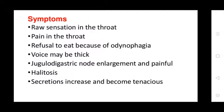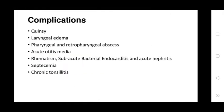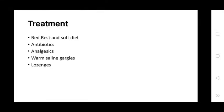Additional symptoms include halitosis and increased secretions. Complications include quinsy, laryngeal edema, pharyngeal and retropharyngeal abscess, acute otitis media, sub-acute bacterial endocarditis, acute nephritis, and septicemia. Treatment for chronic tonsillitis includes bed rest, soft diet, antibiotics, analgesics, warm saline gargles, and lozenges.